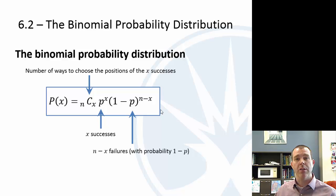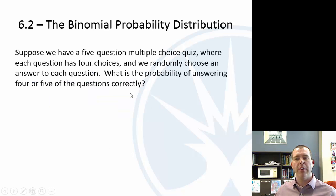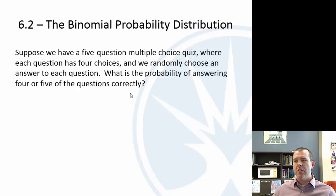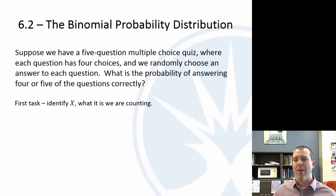We're going to show how to do this in StatCrunch — it's straightforward but you need to know what you're doing, so make sure to get a handle on the formula. Let's do another example: 5 questions, each with 4 choices, randomly choosing an answer. What is the probability of getting 4 or 5 questions correct?